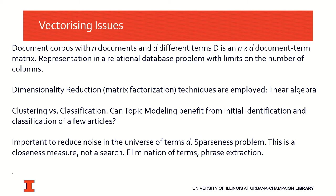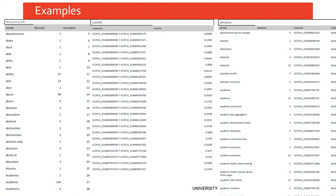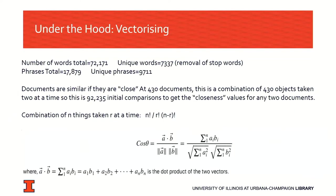There's a question about clustering versus classification: can we do good topic modeling without additional classification of some articles? When building word and phrase indexes, the similarity values between documents — which are between zero and one — don't differ by much. And if you start comparing all values in the corpus, even just 430 documents yields 92,000 initial comparisons — so this is a lot of machine processing and machine time.